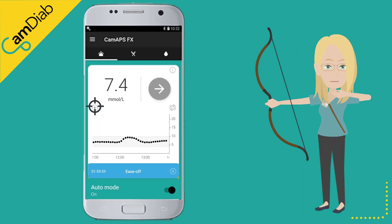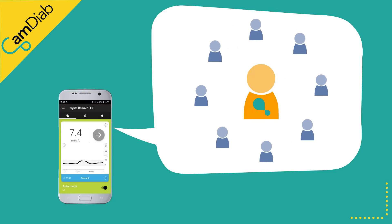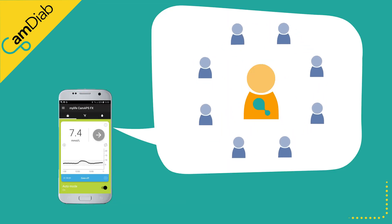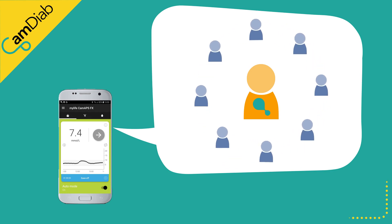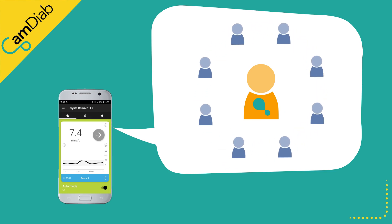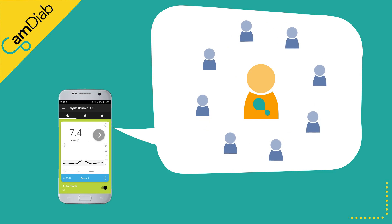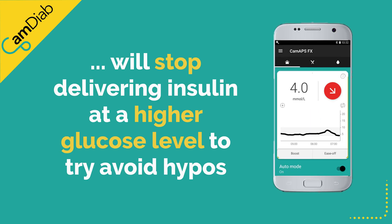While Ease-Off is running, the algorithm will aim for a slightly higher personal glucose target. It will use more conservative settings — for example, insulin action time and insulin sensitivity factors — to calculate how much insulin to deliver, and will stop delivering insulin at a higher glucose level than normal in order to reduce the amount of insulin on board and try to avoid hypos.